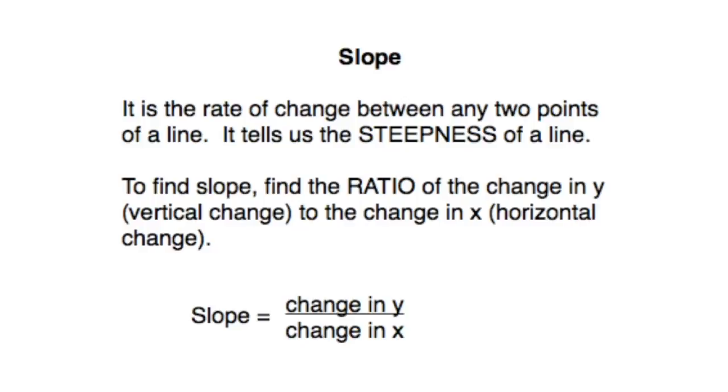Slope. It's the rate of change between any two points of a line. It tells us the steepness of a line. To find slope, find the ratio of the change in y, which is the vertical change, to the change in x, which is the horizontal change. So slope is a ratio of change in y over change in x.